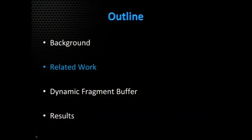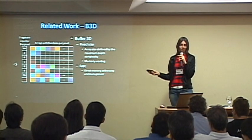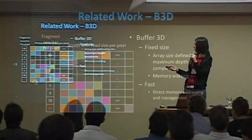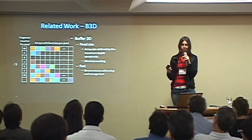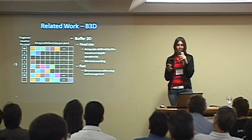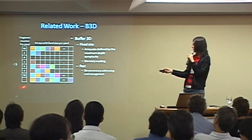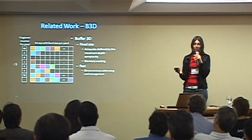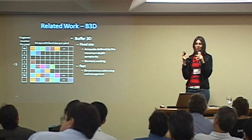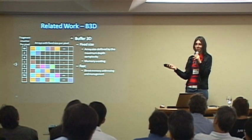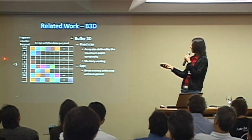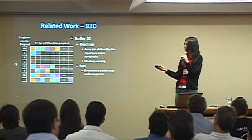The first algorithm we compare our method to is Buffer 3D. It works by preserving for each pixel an array of fragments, and the size of this array is determined by the greatest number of fragments that appears in the frame. So if one pixel has 99 fragments, then all pixels must have 99 entries to store fragments. But some pixels may not have any fragments, so this memory is all wasted.